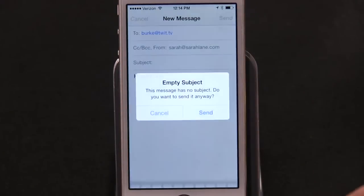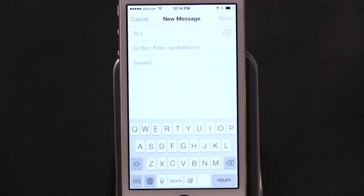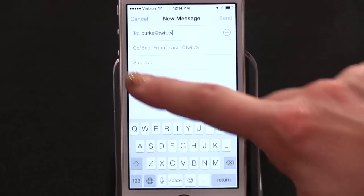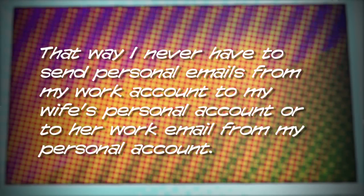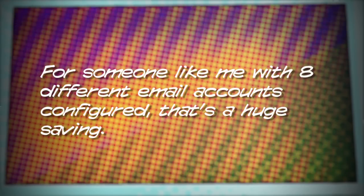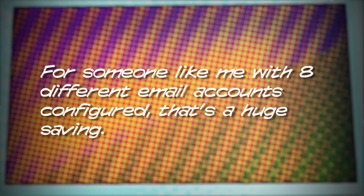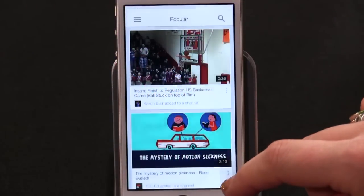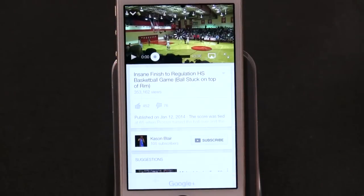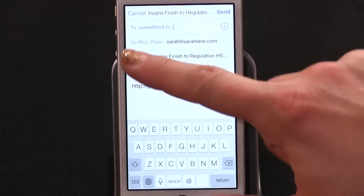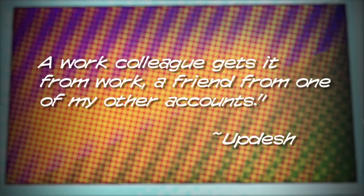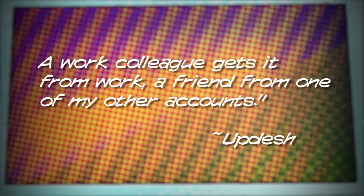It's even cooler when the person that you're sending to also has multiple accounts. The email can tell which of your accounts links to which of their accounts. That way, I never have to send personal emails from my work account to my wife's personal account, or to her work email from my personal account. For somebody like me with eight different email accounts configured, that's a huge saving. And it works wherever I send an email from, like if I'm sending somebody a link to a YouTube video — it'll automatically change the from based on who I choose and the to. A work colleague gets it from work, a friend from one of my other accounts.